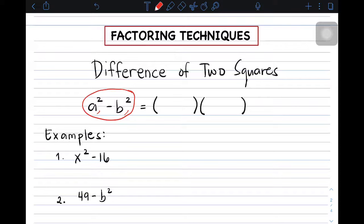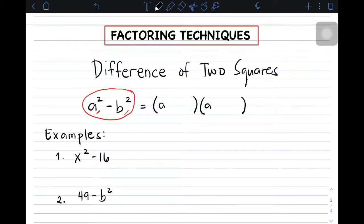So, paano ba ginagawa? Una, kunin yung square root ng the first term, which is a. At yung square root ng first term ay ilalagay mo sa first terms ng dalawang factors. And then, since yung ating sign sa gitna is subtraction sign, we will be using different signs sa dalawang factors. Pwede yung positive and negative, pwede rin namang negative, positive. How about the second term? Get the square root of the second term. Ang square root ng b squared is b. Therefore, iting pattern natin.